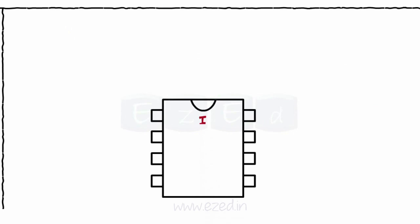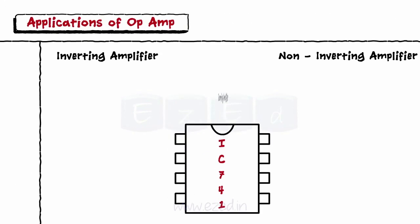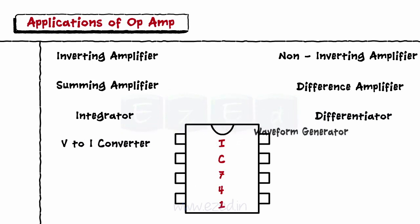Let's see some applications of IC741 op-amp. It is used as an inverting amplifier and a non-inverting amplifier. It can also be used for different mathematical operations like summing amplifier, difference amplifier, integrator, differentiator, voltage to current converter, etc.